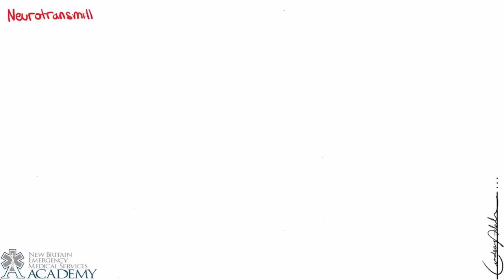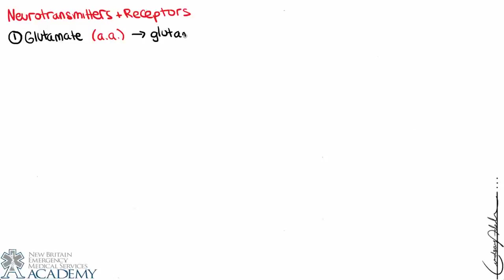Now let's talk about neurotransmitters and the receptors they belong to. Specific neurotransmitters bind to a specific set of receptors, act in a certain way, and produce a specific response. The first neurotransmitter to consider is glutamate — it's an amino acid that binds to glutamate receptors and NMDA receptors. Its functions can be both metabotropic and ionotropic; NMDA tends to be metabotropic, while glutamate receptors can be ionotropic.